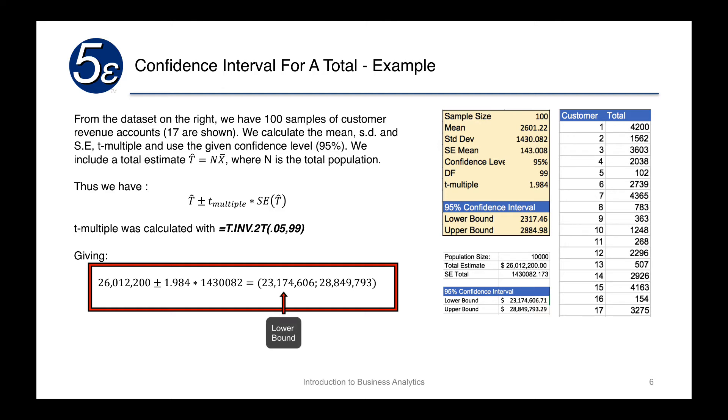And we'll end up with 23 million on one side and 28 million on the other side. Our 95% confidence interval will be between 23 million and 28 million.